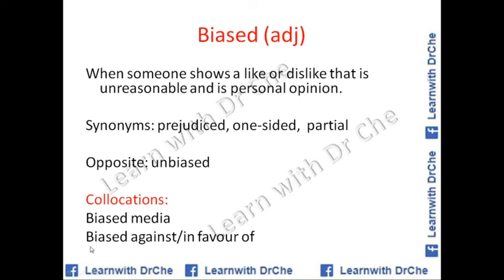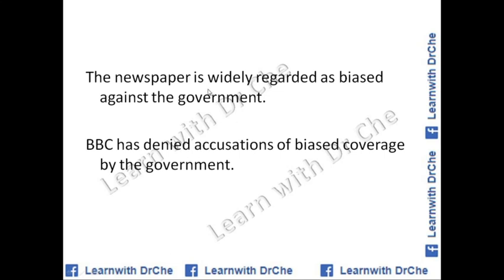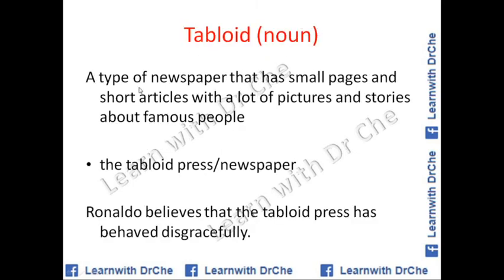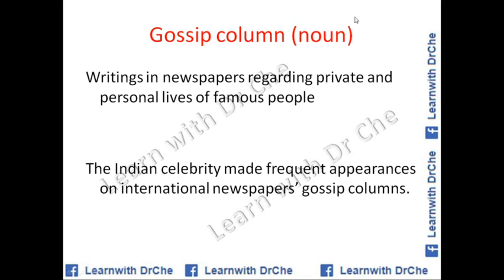Collocations: a biased media, biased against, or in favor of. The newspaper is widely regarded as biased against the government. The BBC has denied accusations of biased coverage. Tabloid — as you already know — is a form of press: a type of newspaper with small pages, short articles, lots of pictures and stories about famous people. You can say tabloid press or tabloid newspaper. Ronaldo believes that the tabloid press has behaved disgracefully.